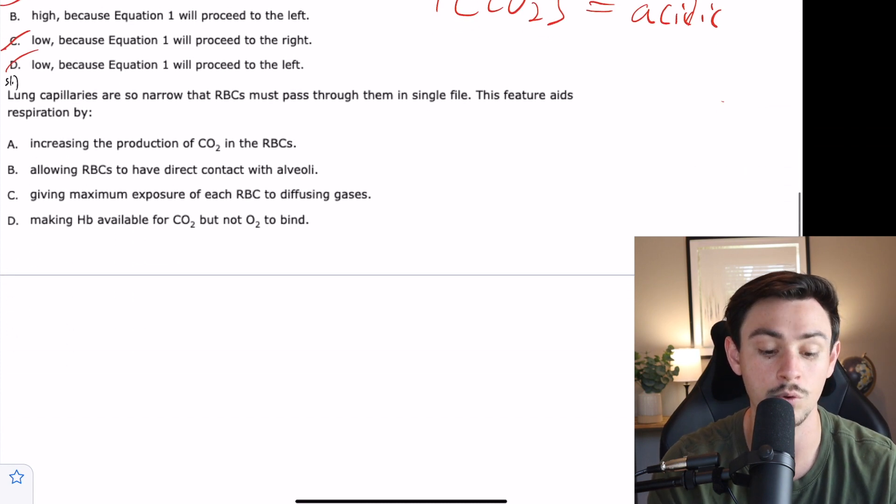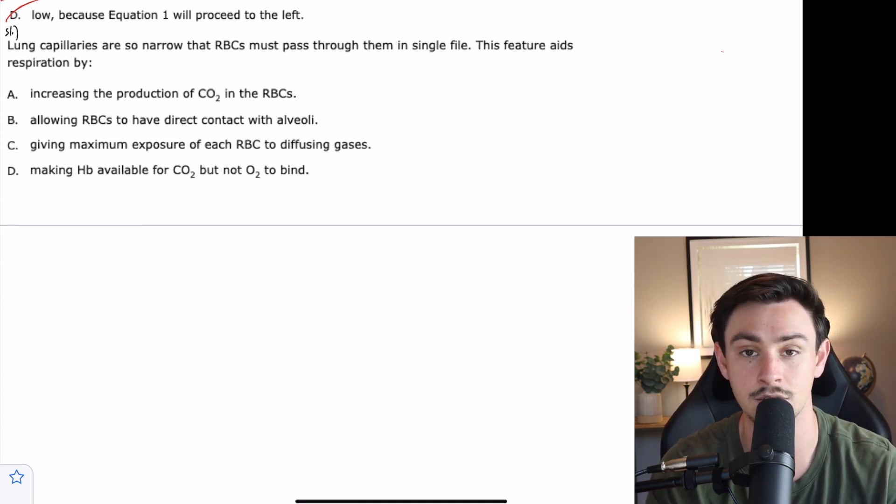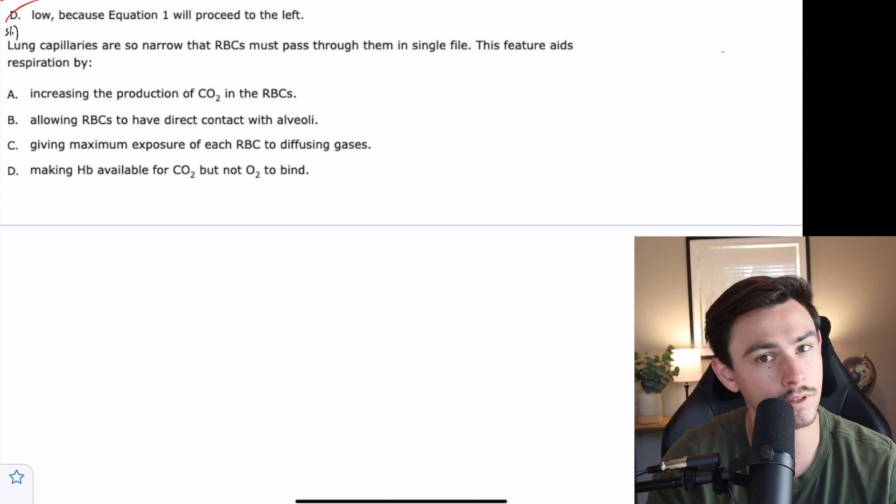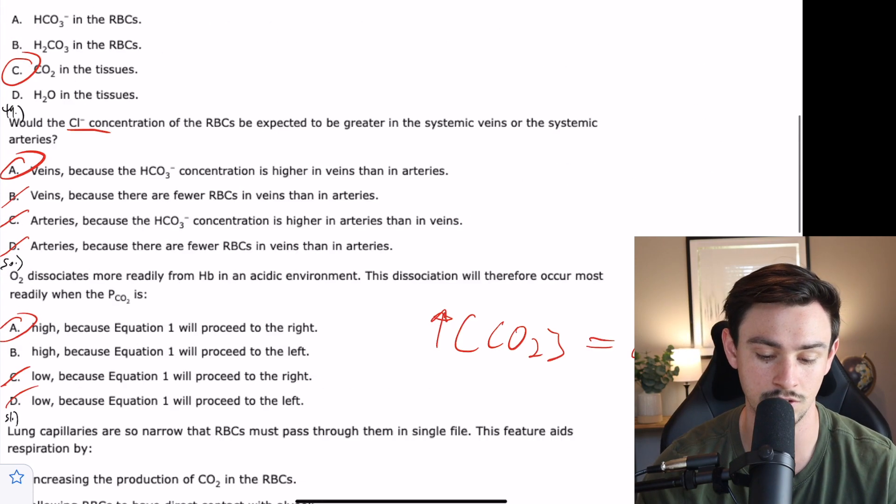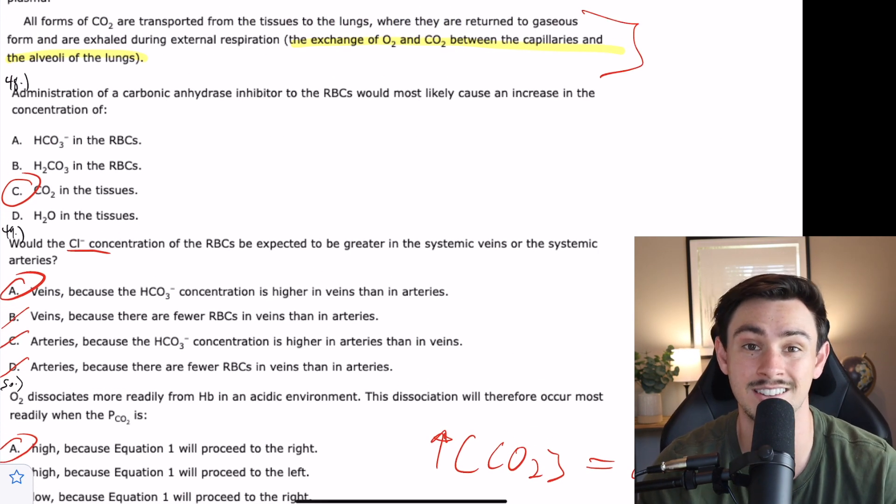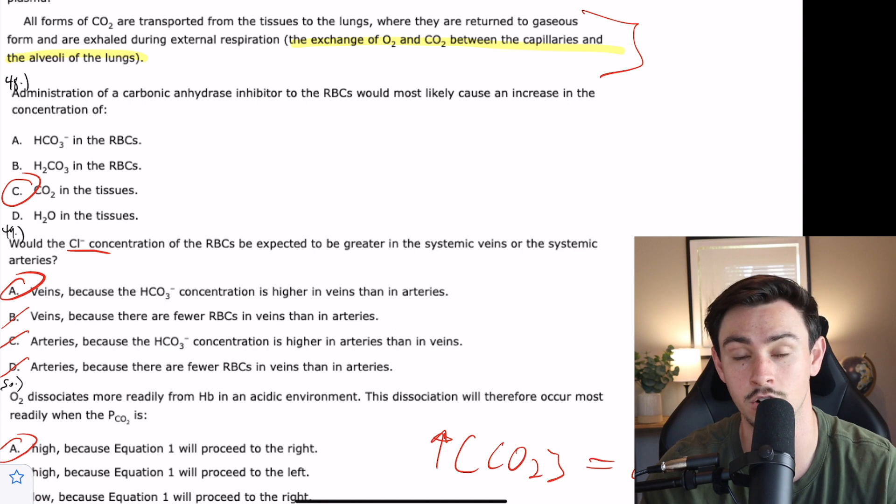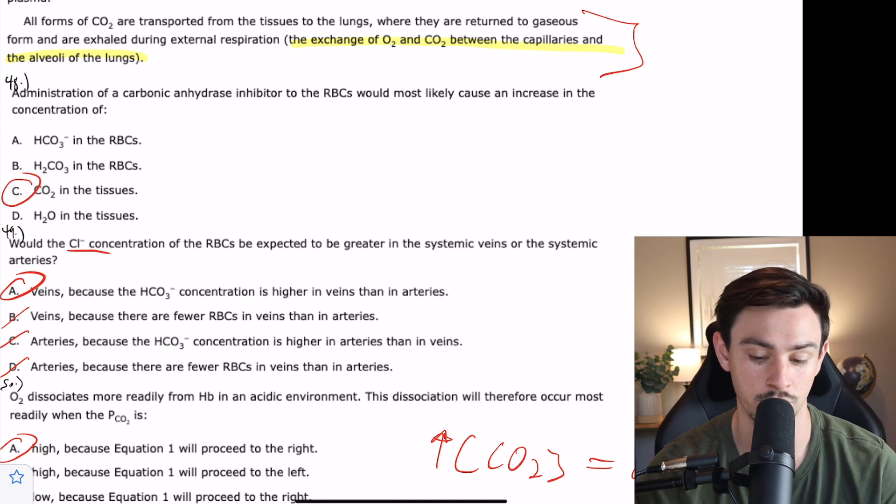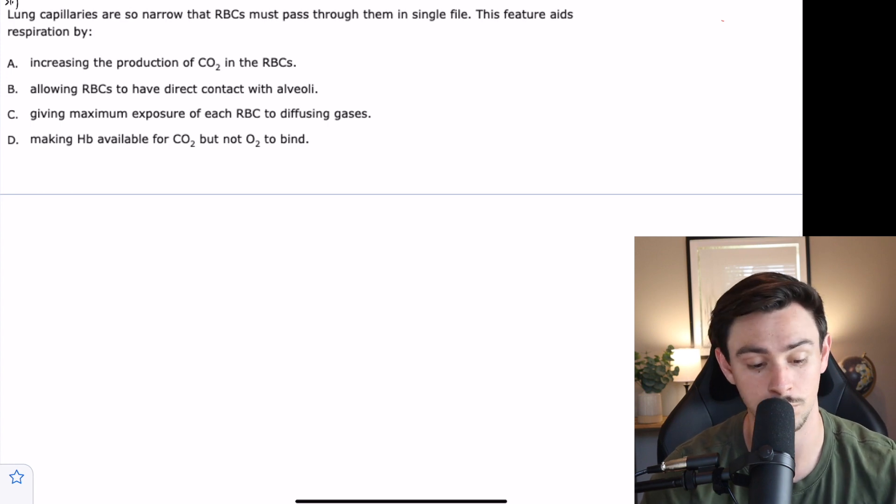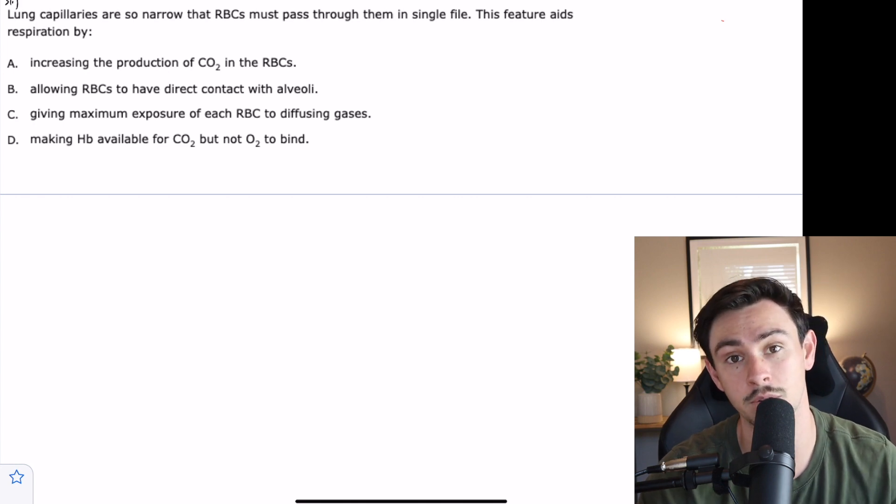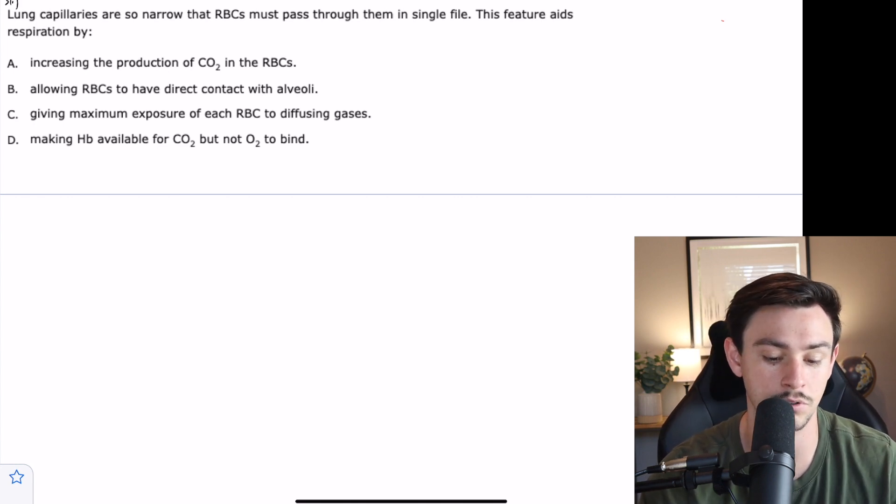The last one says lung capillaries are so narrow that red blood cells must pass through them in single file. This feature aids respiration how? Ask yourself, what are red blood cells doing in the lungs? The passage tells us that is the site of gas exchange. These red blood cells are bringing CO2 to be blown off and they are absorbing oxygen to be taken to peripheral tissues. A says increasing the production of CO2 in the red blood cells. The red blood cells aren't producing a ton of CO2, they're just carrying it.